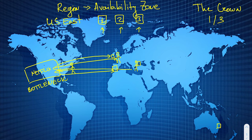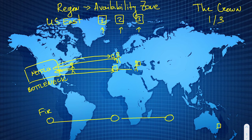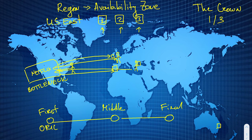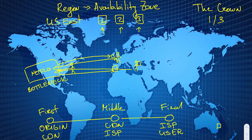This is an oversimplification — what actually happens involves three connection points: the first mile, the middle, and the last mile. The first mile is from the origin server to the CDN. The second piece is from the CDN to your internet service provider, your ISP. The final one is from your internet service provider to your device — your computer or mobile phone.